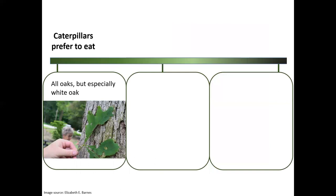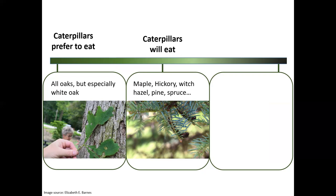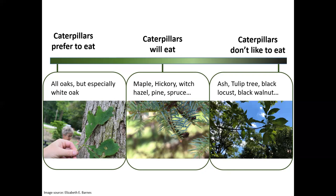What do they like to eat? These are generalized herbivores — they're going to eat a variety of things, but they're going to focus primarily on the oak species throughout our state. We have lots of different oak species. They're going to preferentially go for white oak, but they are not limited to that. Then they're going to move on to the next best thing, which could be maple, hickory, witch hazel, pine, or spruce. What they're going to typically avoid is ash trees — not that they'll find many right now — but they'll also avoid tulip, black locust, and black walnut. So those trees will be relatively safe from the gypsy moth. If you're worried about what's attacking your tree, first identify which species it is — you can start eliminating which herbivore is currently going after it.